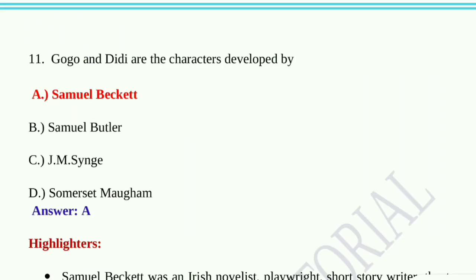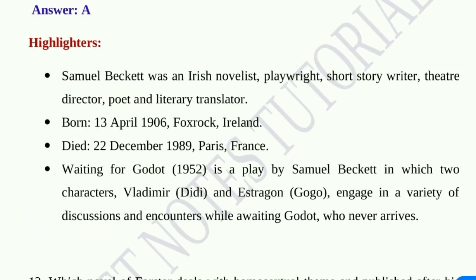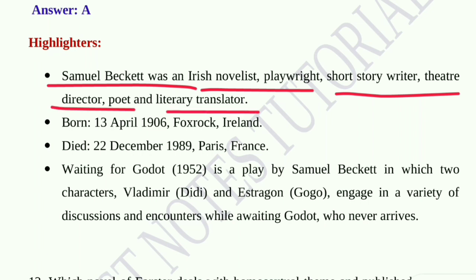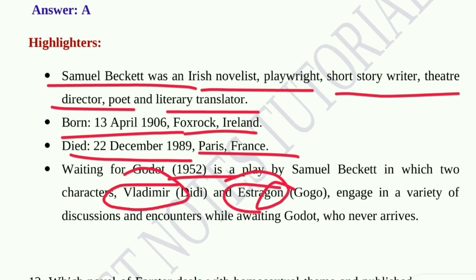Question number eleven: Gogo and Didi are characters developed by option A, Samuel Beckett; option B, Samuel Butler; option C, J.M. Synge; option D, Somerset Maugham. Option A, Samuel Beckett, is the correct answer. Samuel Beckett was an Irish novelist, playwright, short story writer, theatre director, poet, and literary translator, born on 13th April 1906. In his play Waiting for Godot, published in 1952, two characters — Vladimir (Didi) and Estragon (Gogo) — engage in various discussions while waiting for Godot, who never arrives.